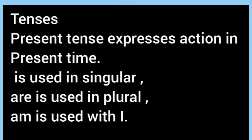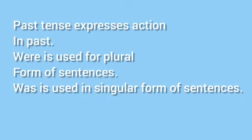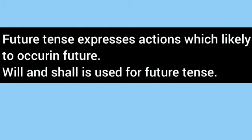Past tense expresses action in the past. 'Were' is used for the plural form of sentences and 'was' is used in the singular form. Future tense expresses action which is likely to occur in the future; 'will' and 'shall' are used for future tense.